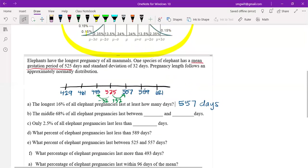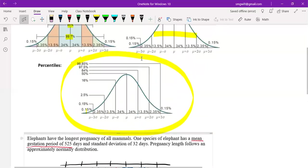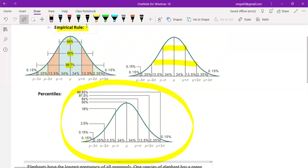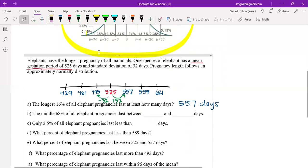Next, the question is asking me the middle 68% of all elephant pregnancies last between how many and how many days. Remember that the empirical rule tells us that the middle 68 is one standard deviation from the mean. So if we look at our one standard deviation from the mean, that's these values here. If I go one away, it's between 493 and 557 days.